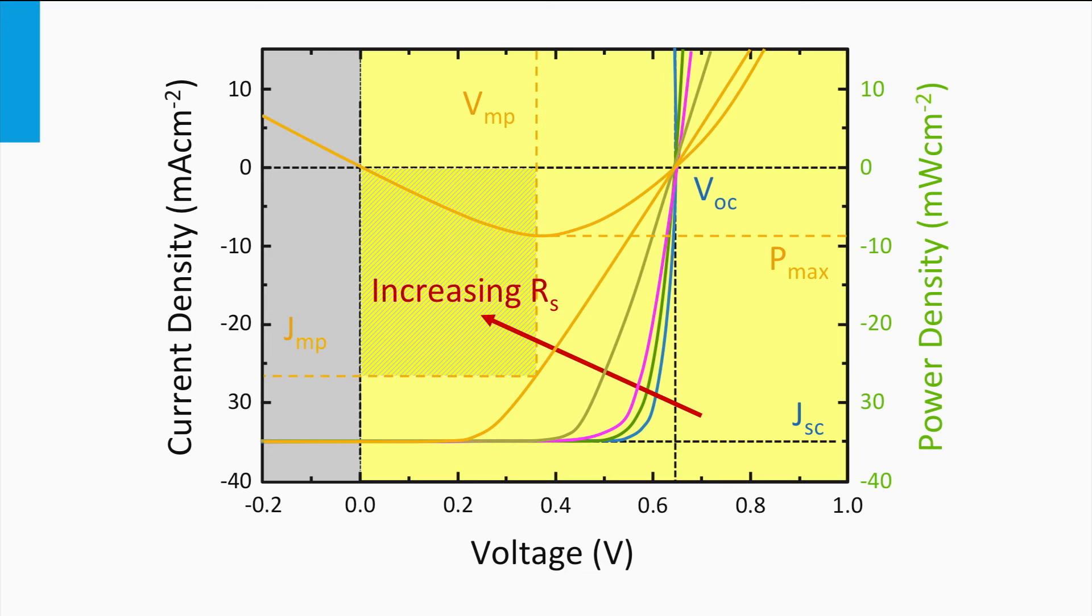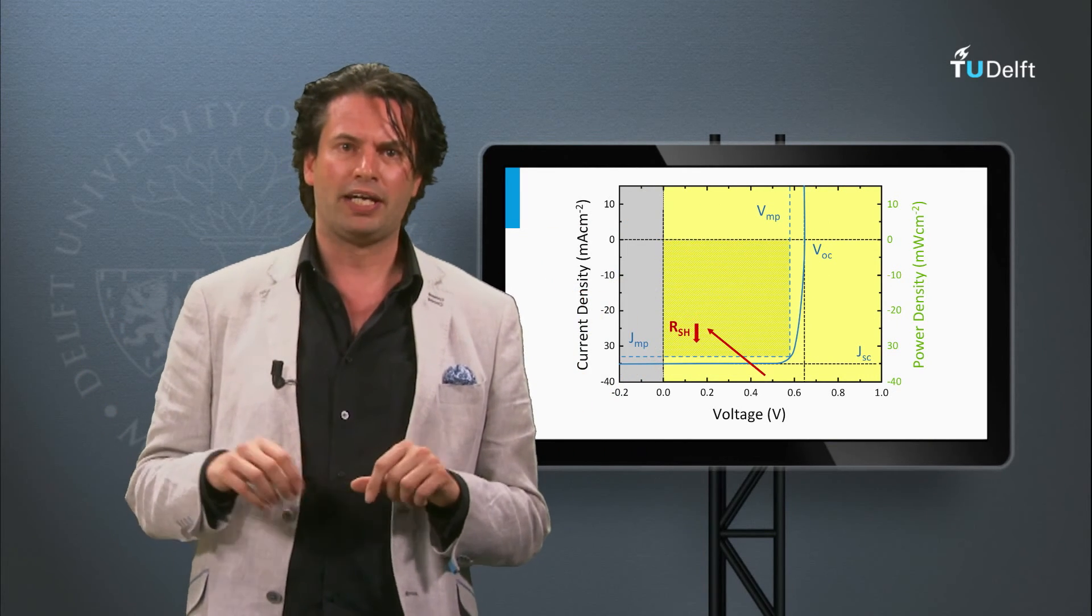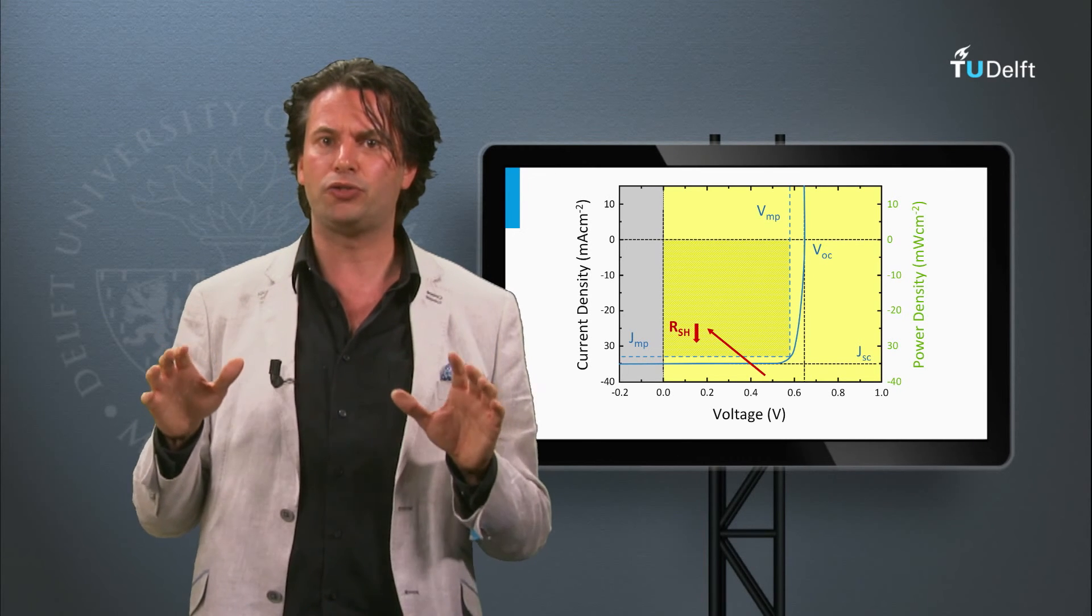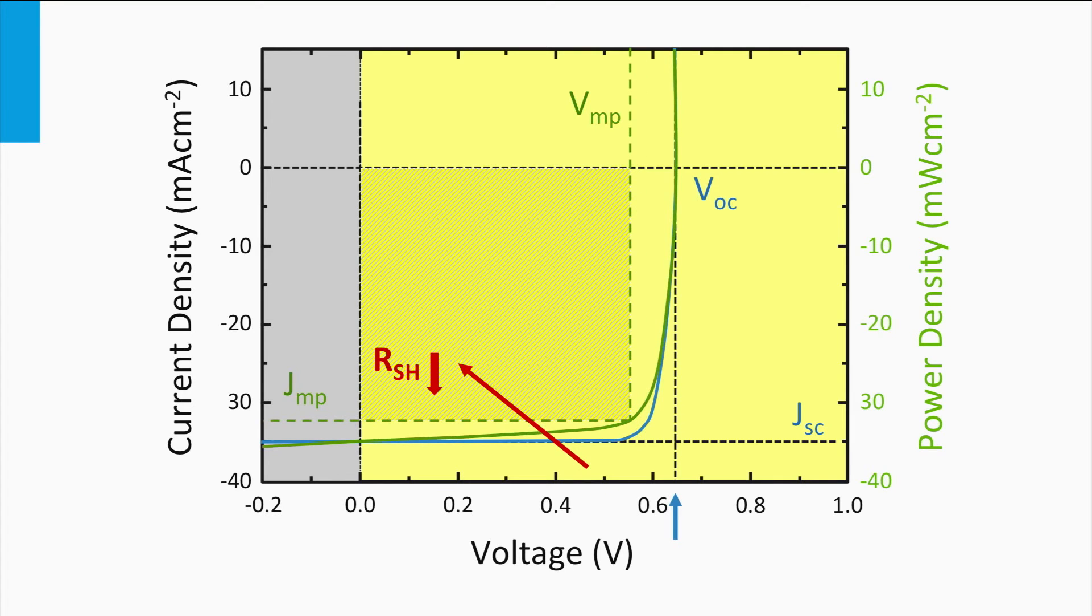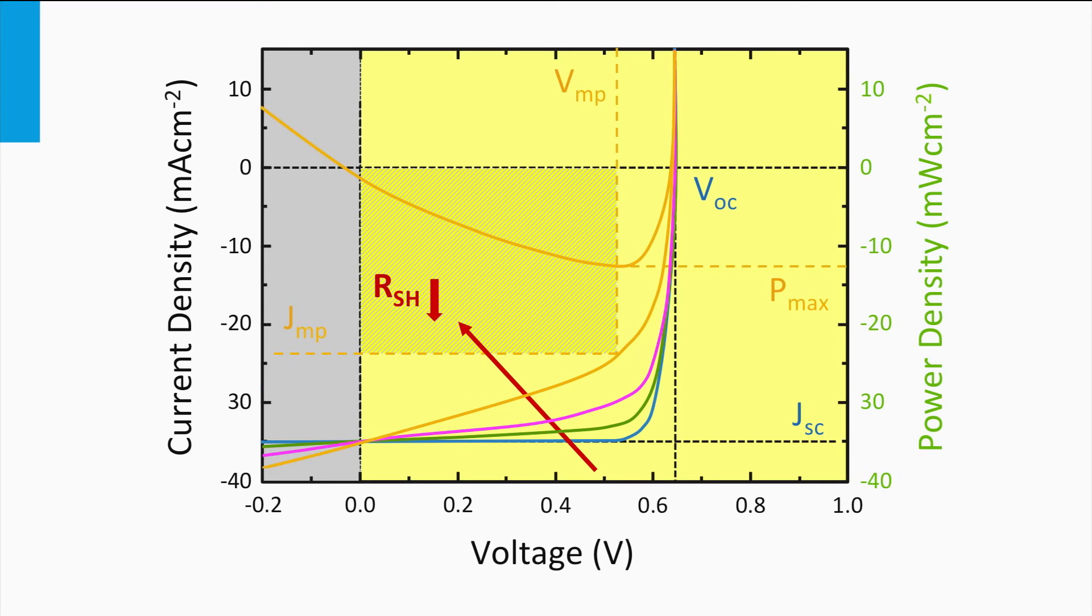Note that the series resistance does not affect the position of the open circuit voltage. As at the open circuit voltage the current density is equal to zero, the voltage drop over the series resistance is zero as well. Let's start again with the JV curve of an ideal p-n junction. This means that the shunt resistance is infinitely large. Now we are going to decrease the shunt resistance. As you can see the slope at the short circuit current density point starts to become more positive. The maximum power point and fill factor is affected as well. The smaller the shunt resistance, the smaller the fill factor will be.